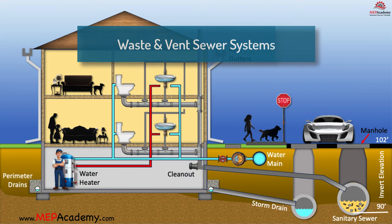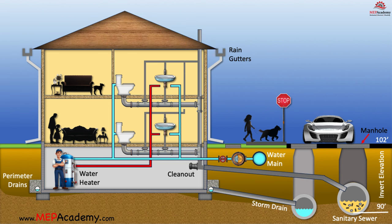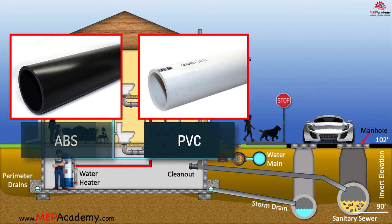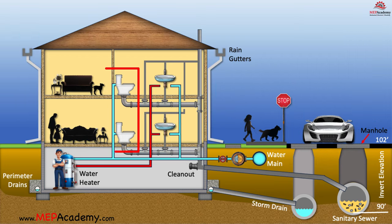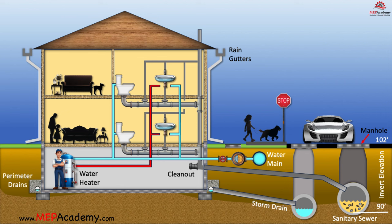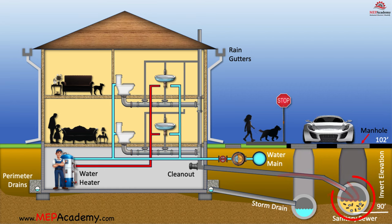In most homes, the sewer waste system is installed using ABS, PVC, or cast iron drain pipes and vents. These pipes interconnect with fixtures like toilets, sinks, bathtubs, and showers. When a fixture is used, waste travels through these drain pipes, which are required to be sloped to keep things moving. The waste will ultimately reach the municipality's main drain beneath the street.